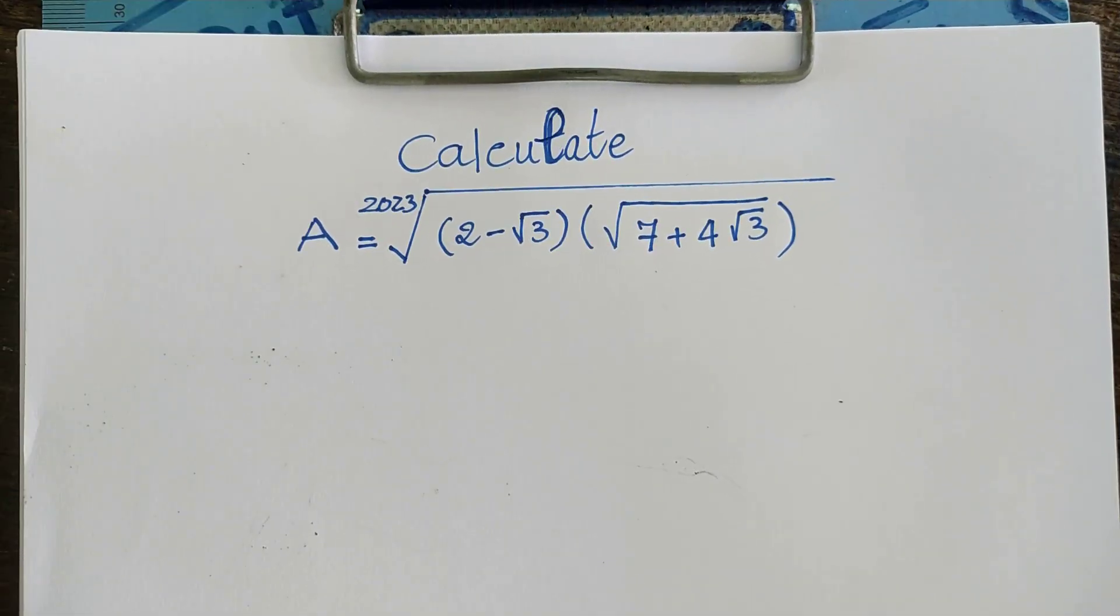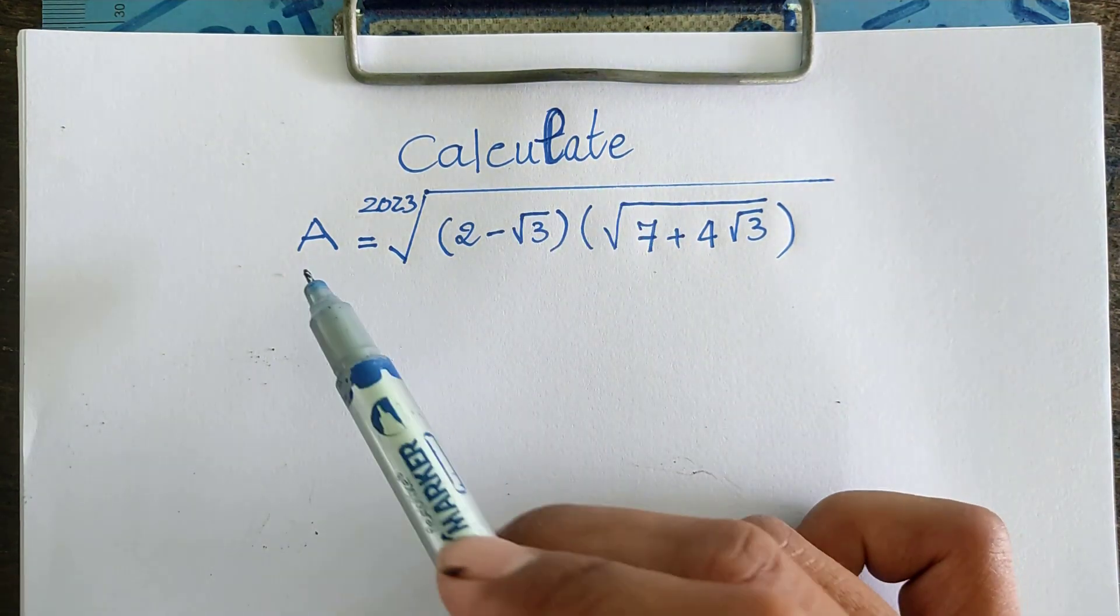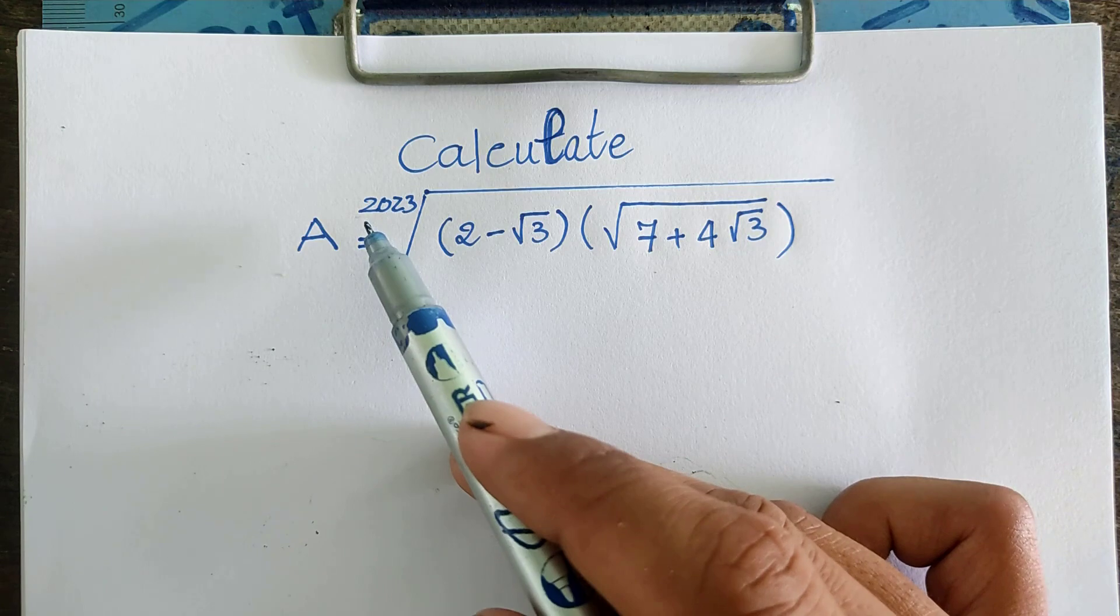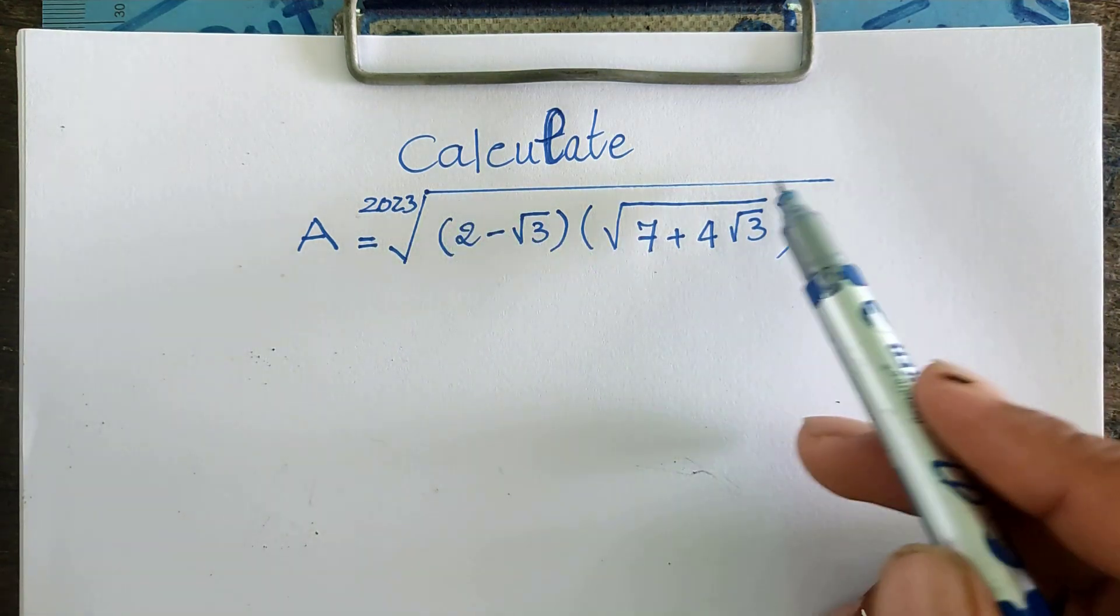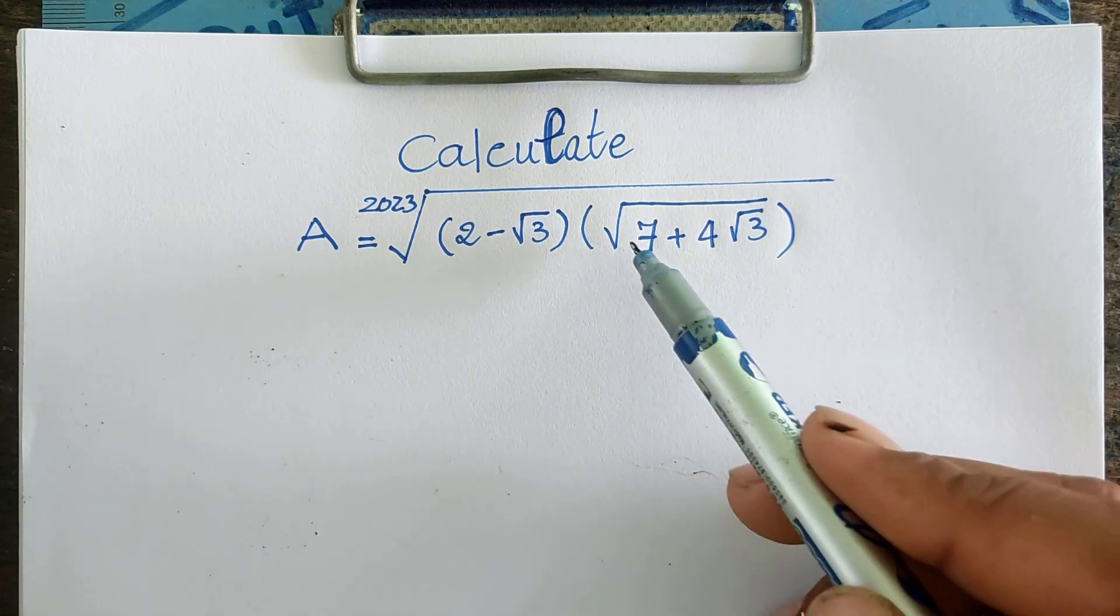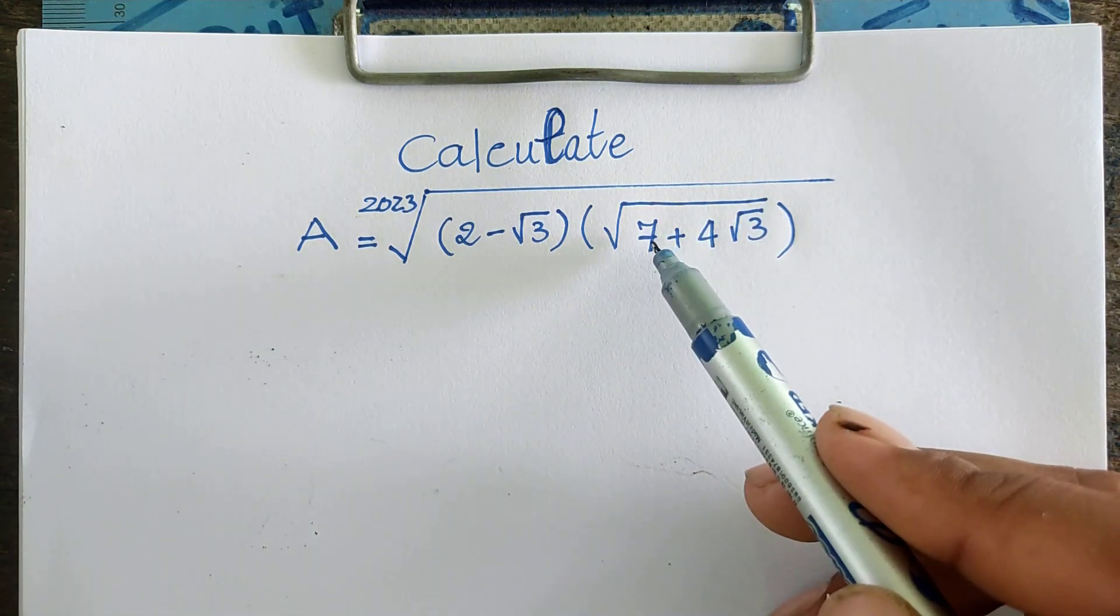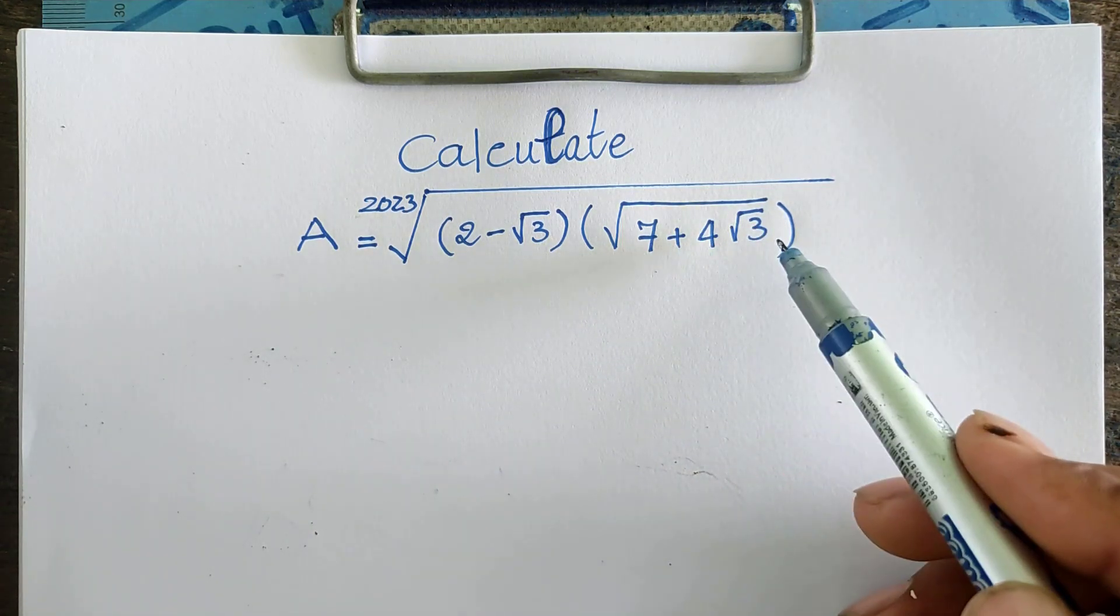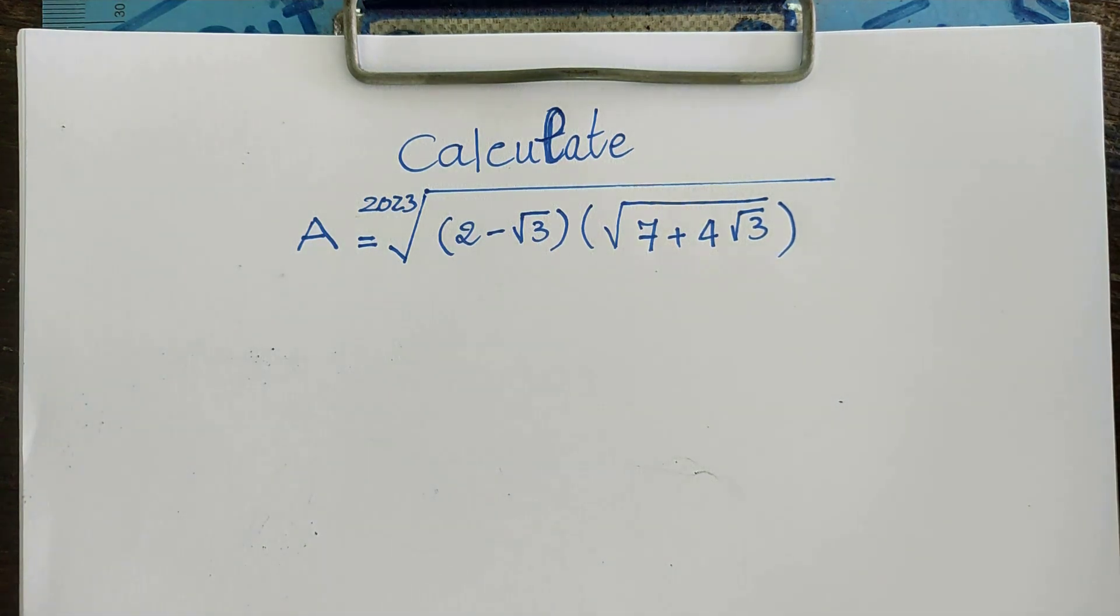Hello everyone, welcome to my YouTube channel. Today I have one exercise: calculate A equals 2023 root of 2 minus square root 3, multiplied by square root of 7 plus 4 square root 3. Do you know how to solve this? If you know, we can do it together.